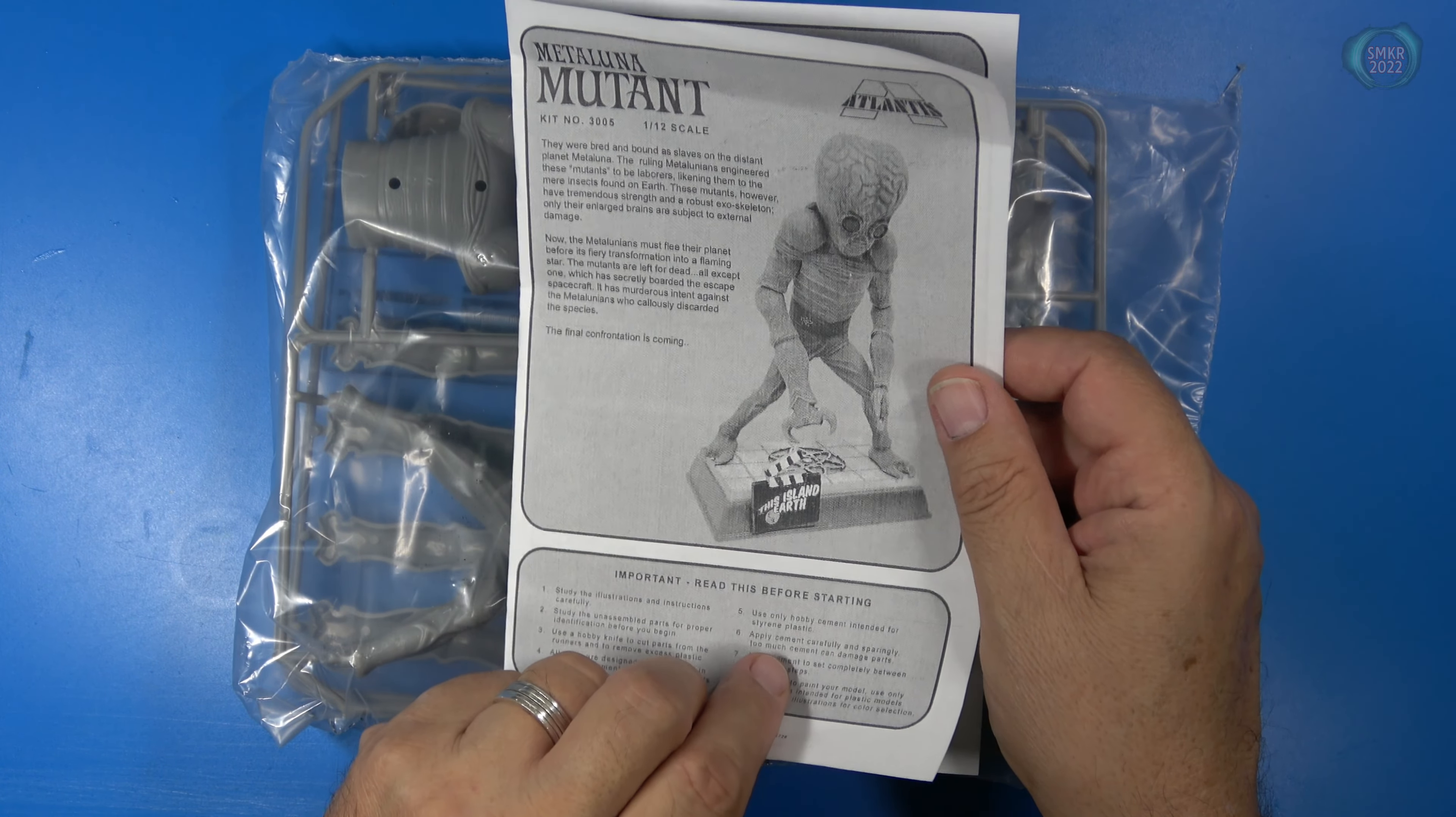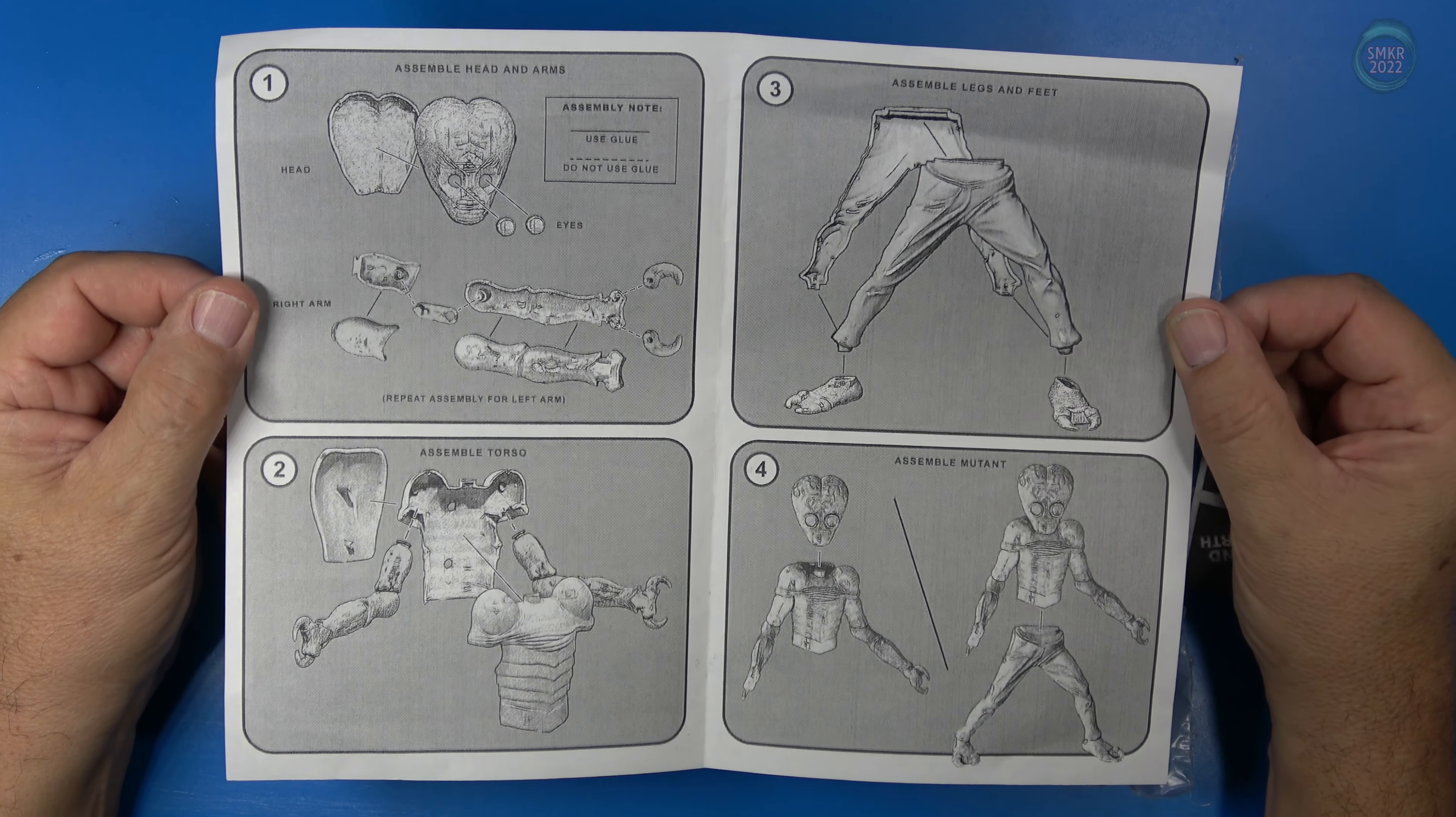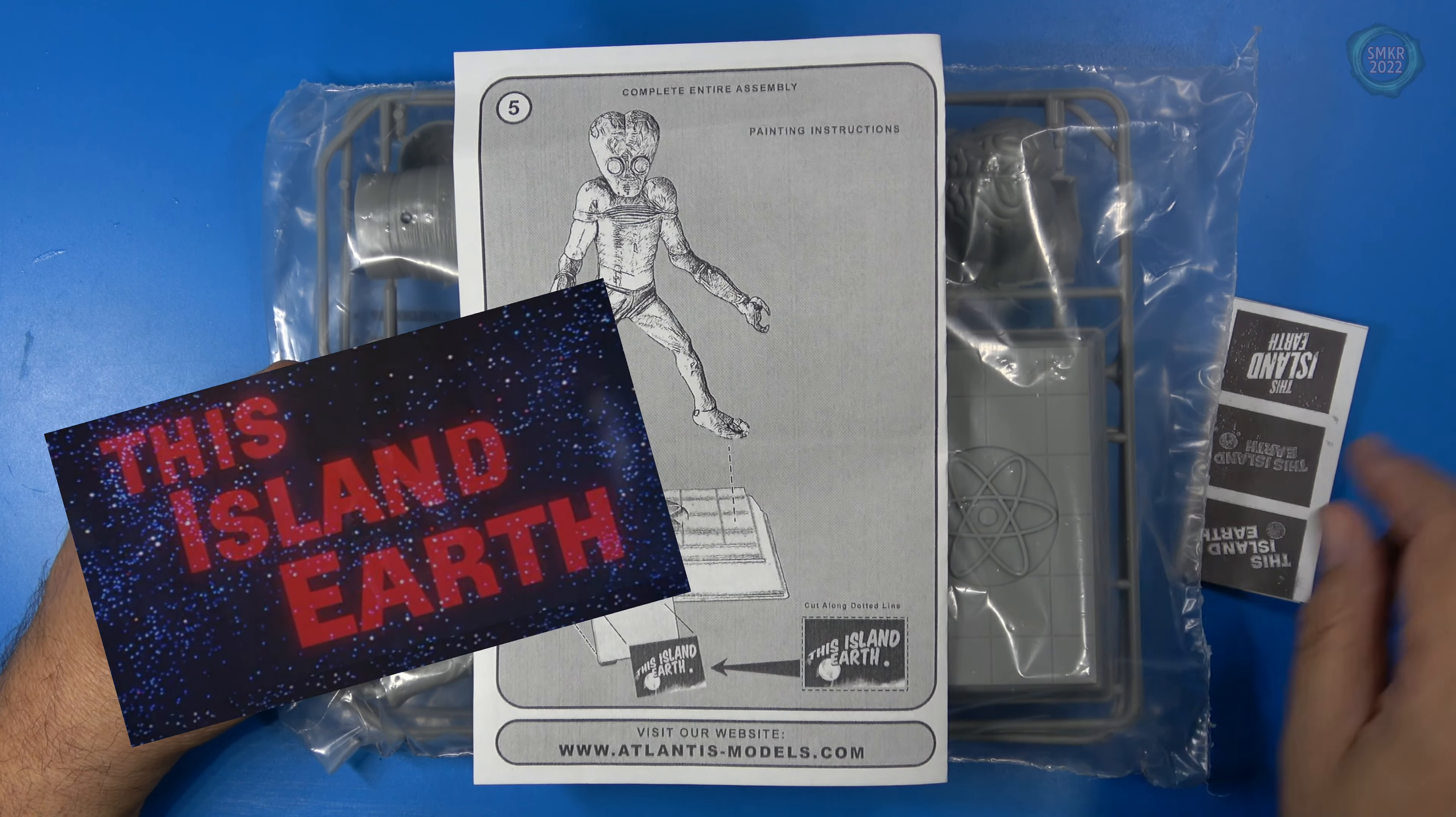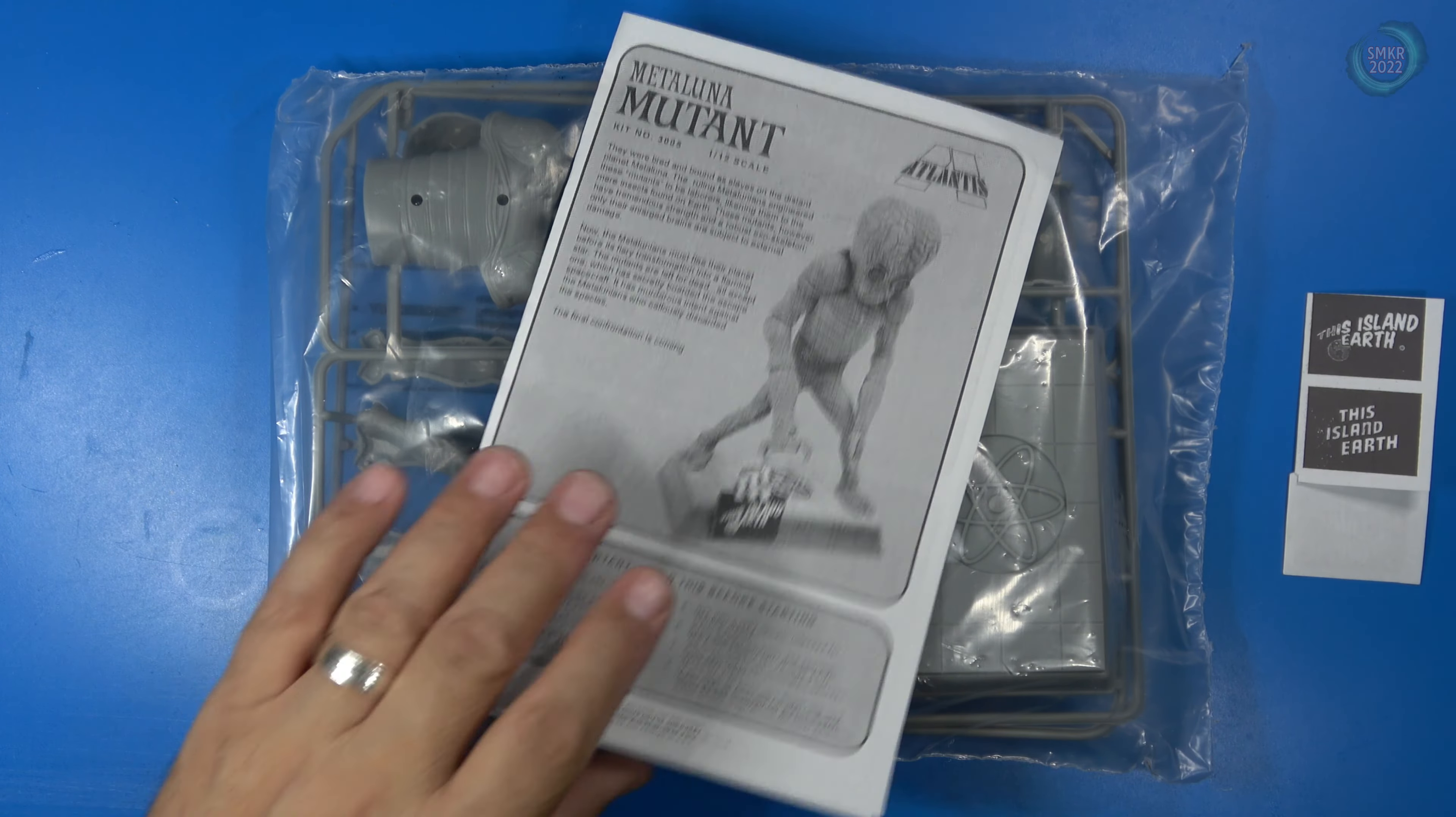Here's the instructions, black and white of course, just like the old Aurora style. Very simple to construct here. We construct the head first, the arms and hands and claws, then assemble the torso, then the legs and feet, combine everything, and mount to the base. This is from the movie This Island Earth, kind of a funny looking monster in that movie, not very convincing and really not very scary.